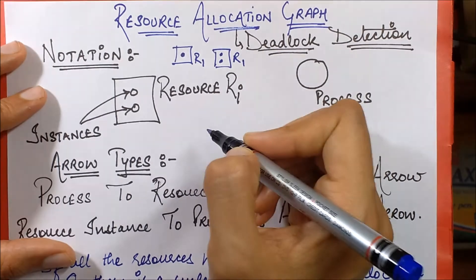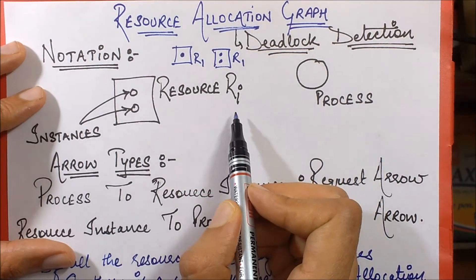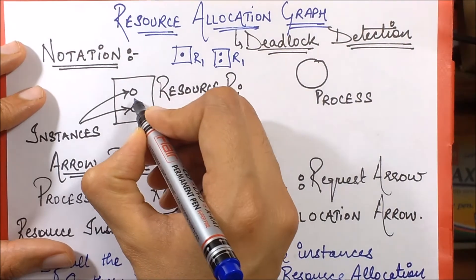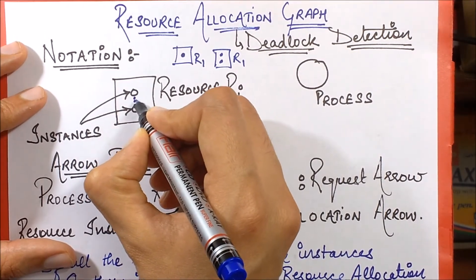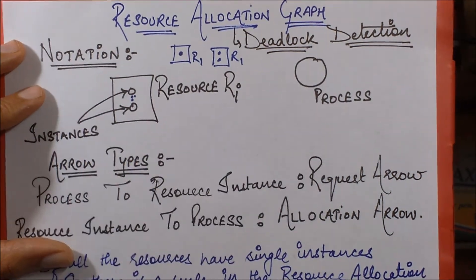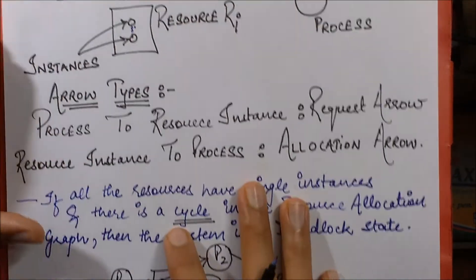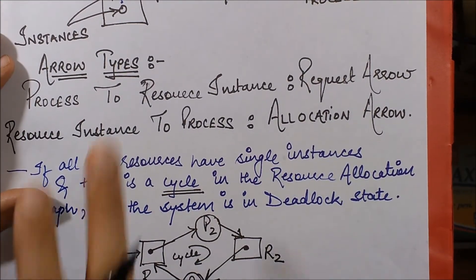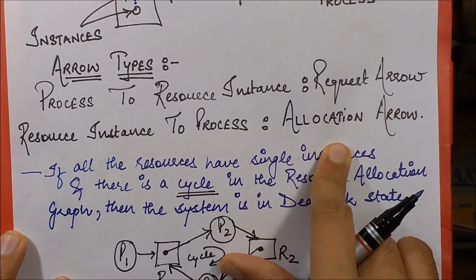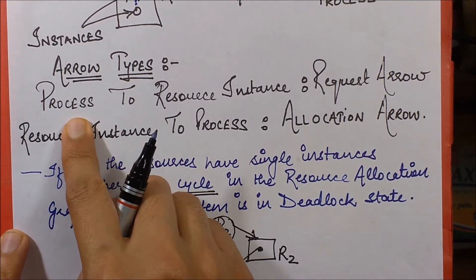So any generalized resource Ri can be represented in this form, where these are its instances. These instances can be n instances, shown as dots, indicating there can be any number of instances. Next come the arrow types — there are two types of arrows in this graph: request arrow and allocation arrow.